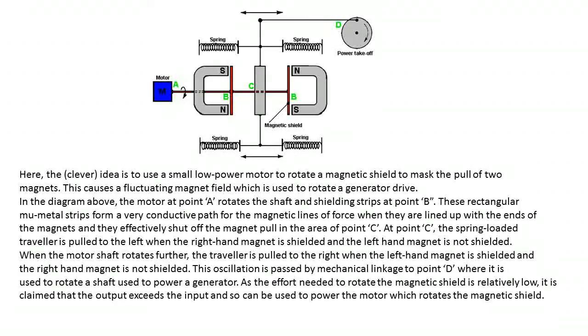At point C, the spring-loaded traveler is pulled to the left when the right hand magnet is shielded and the left hand magnet is not shielded. This oscillation is passed by mechanical linkage to point D where it is used to rotate a shaft used to power a generator.